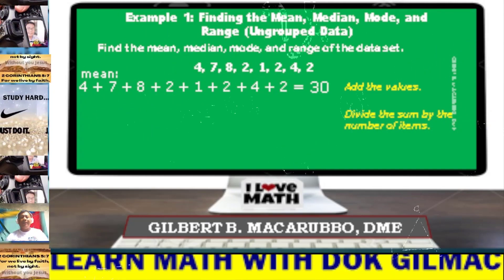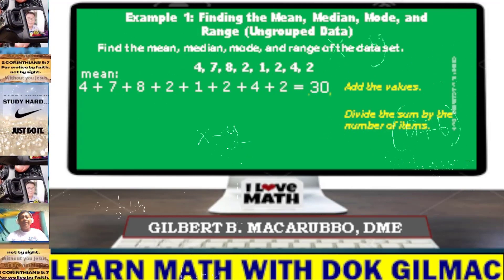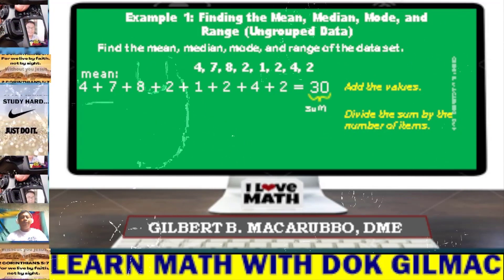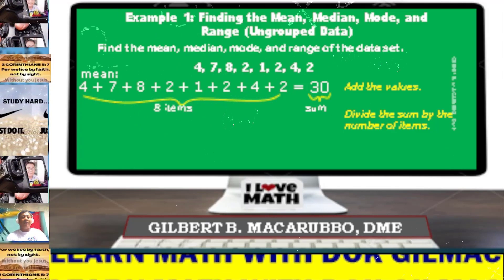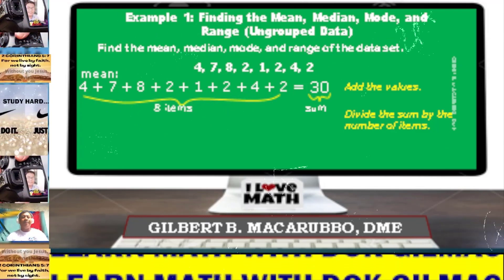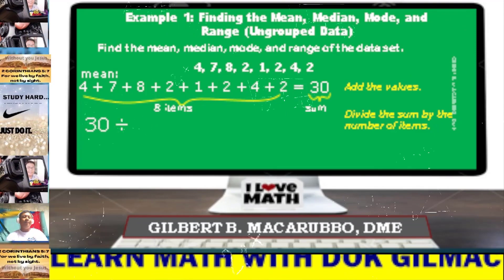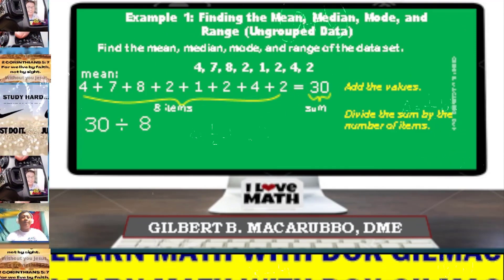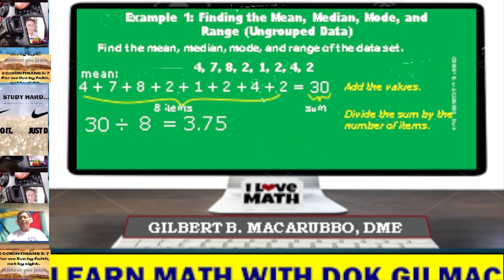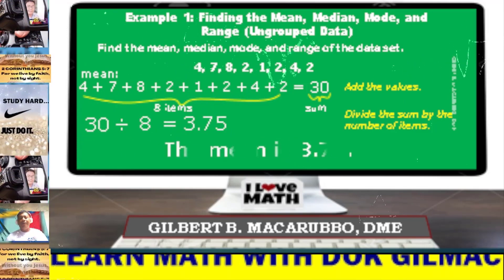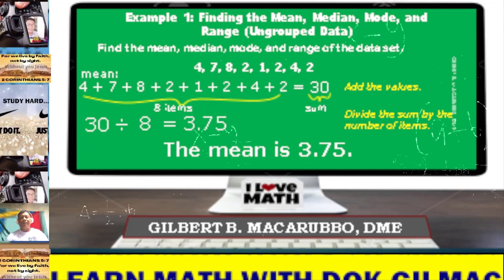Divide the sum by the number of items. As you can see, we have the sum and the number of items, which is 8. So let's divide: 30 by 8. This is simply equal to 3.75. Therefore, the mean is 3.75.